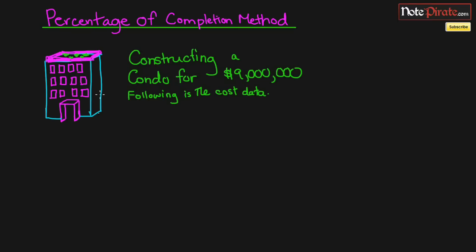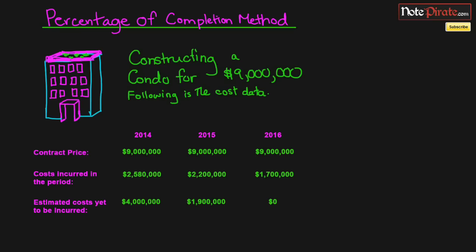On the left hand side I've drawn a condo with a nice little awning on top and a balcony. The contract price for the condominium is nine million dollars. Below that is the cost data — the costs incurred in each period, and below those are the estimated costs to go. The estimates can sometimes change because they are just estimates.